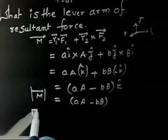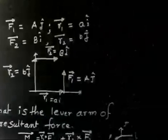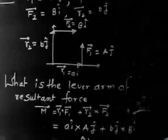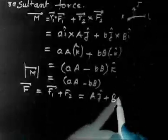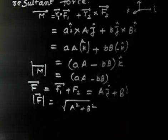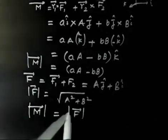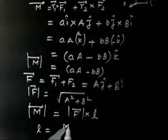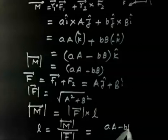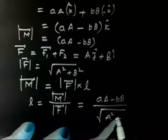Now the total force is F1 plus F2. F1 is AJ and F2 is BI, so the resultant force has magnitude √(A² + B²). The lever arm is defined by: magnitude of moment equals magnitude of force times lever arm. So lever arm = |M| / |F| = |A² − B²| / √(A² + B²).